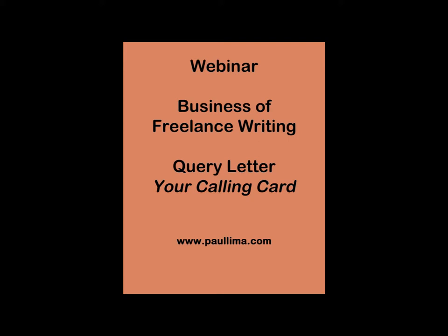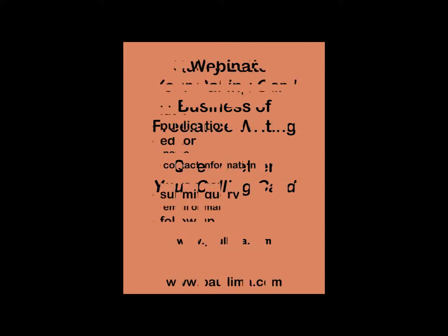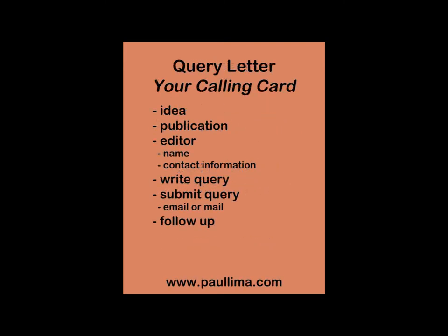Before you write your query letter, you need an article idea. And once you write your query letter, you have to send it to the right editor at the right publication. That means you have work to do. You have to develop or come up with the idea that you want to sell, determine who your target audience would be interested in this idea, then find publications that appeal to that target audience. Once you've found a publication or several publications, you have to find the editor's name and contact information.